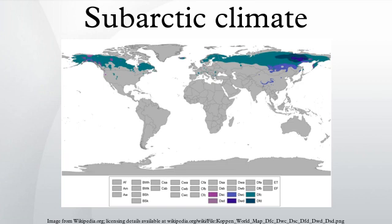Most subarctic climates have very little precipitation, typically no more than 15 inches over an entire year. Away from the coasts, precipitation occurs mostly in the warmer months, while in coastal areas with subarctic climates the heaviest precipitation is usually during the autumn months, when the relative warmth of sea versus land is greatest. Low precipitation, by the standards of more temperate regions with longer summers and warmer winters, is typically sufficient — given the very low evapotranspiration — to allow a waterlogged terrain in many areas and to permit snow cover during winter.